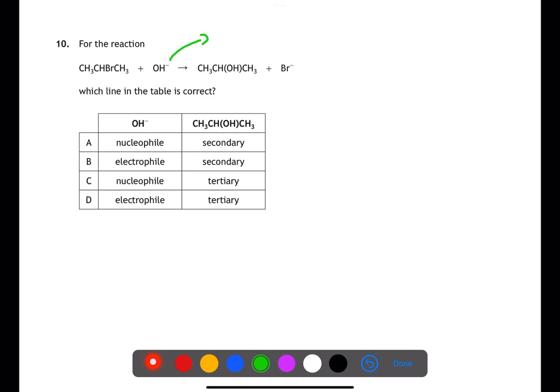In question 10 we have a reaction. This is a nucleophilic substitution reaction. OH- is a negative ion and acts as a nucleophile. The other reactant is a haloalkane. Let's draw this out in full so we can see the structure. Once we have this drawn out in full it's clear to see that we have a secondary haloalkane. Therefore the answer is A.